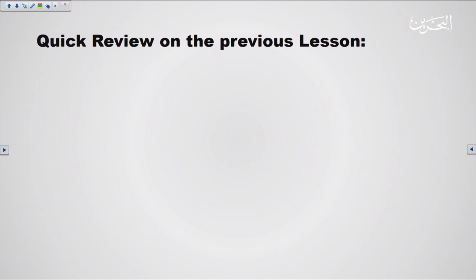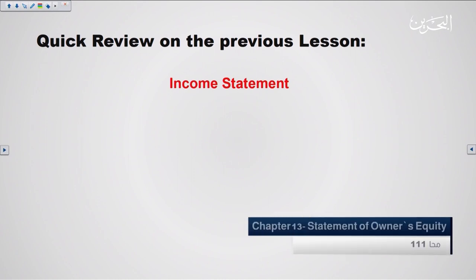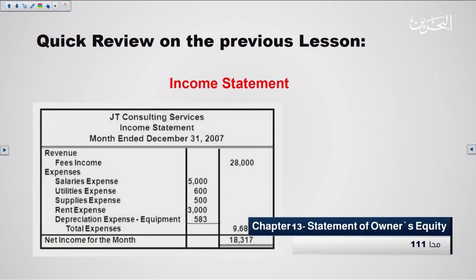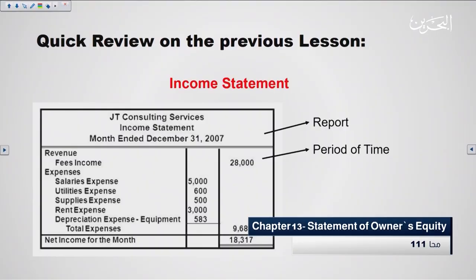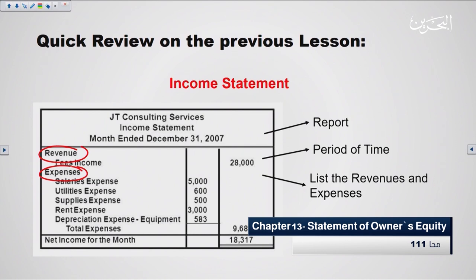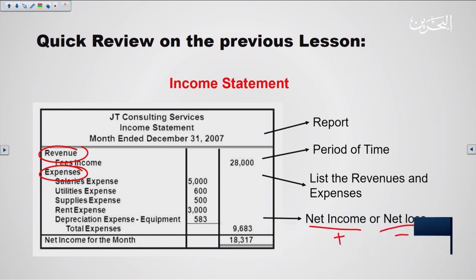Let's have a quick review on the previous lesson. We talked about the income statement — it is a report prepared for a period of time, like the end of the month or end of the year. We list the revenues and the expenses to know whether the company has a net income, which is a gain in profit, or a net loss, which is losing money.